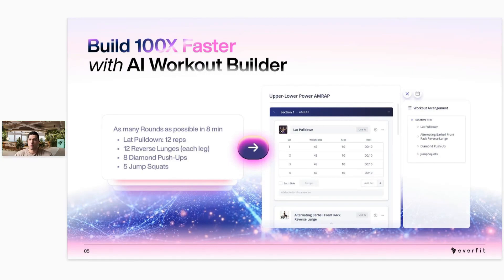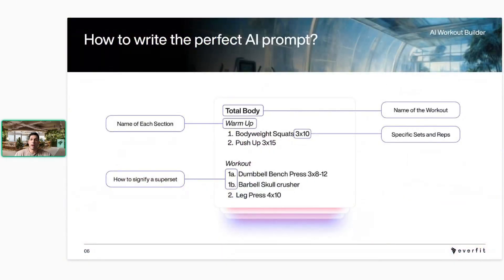Here are some best ways to write prompts for the AI. The way I think about it: if you're on the gym floor and someone asks you to write down sets, reps, and weight for certain exercises — how you'd write that on a sheet of paper is how you want to type it into the AI. If you have a title for the workout, that goes straight at the top. With our platform you can have different sections within your workouts, such as a warm-up.